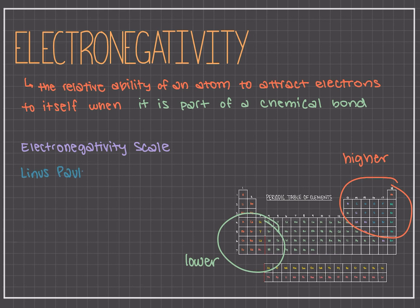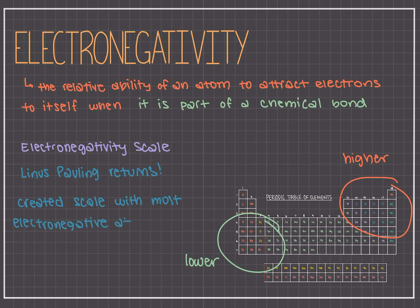Electronegativity of an atom theoretically and technically is not fixed and simple. It can be measured experimentally and can depend on the chemical environment, like which other atoms are present and how relatively electronegative they are. But when different measures for measuring electronegativity are compared, they all tend to give similar values for an element. The electronegativity values of an element were proposed by Linus Pauling. He created a scale with a value of 4.0 given to the most electronegative element, which is fluorine.